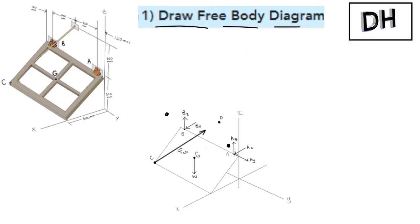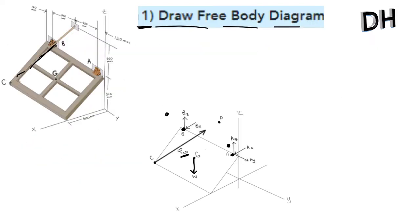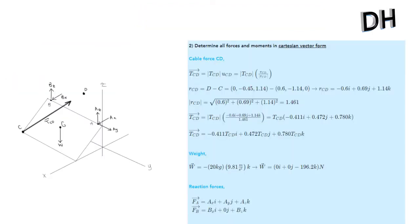Let's begin by drawing the free body diagram — always do this first. We will have all of the reactions at A in x, y, and z. We will have only reactions in x and z at B, since B was modified as denoted by the question. We will also have a tension in the cable, which I'll call TCD. And we have the weight of the window acting at G. So this is the free body diagram — let's proceed.